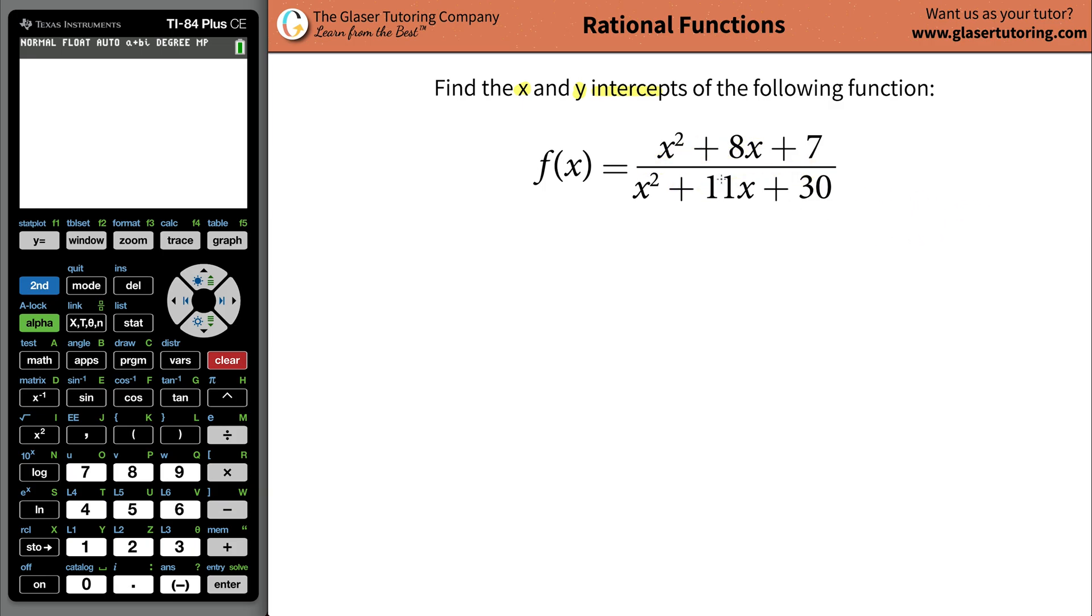So what we're going to do first is whenever you're trying to find the x and y-intercepts of a function, I want you to fully factor the rational function out. Look at the numerator, see if you can factor that, look at the denominator, see if you can factor that. And then we're going to see if there's any terms that we can cancel and kind of simplify it from there, because sometimes it's a little deceiving. If factors will cancel, then it might not be exactly what we thought would be the x and y-intercepts. So first thing is to factor this.